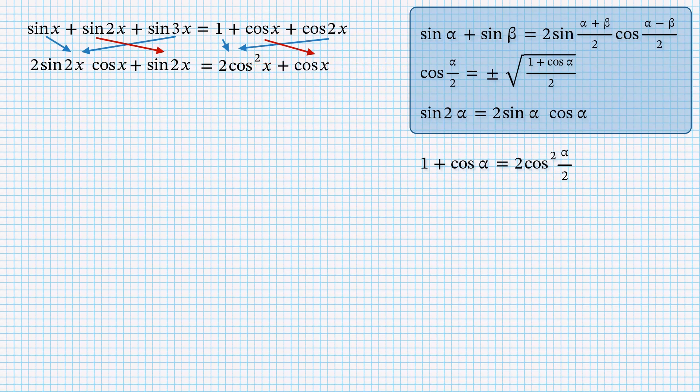We see that the left hand side contains common factor sine of 2x and the right hand side contains a common factor which is cosine of x. So we factorize both sides and surprise, we've got a new common factor 2 times cosine of x plus 1. So we move the whole right hand side to the left leaving 0 at right and factorize the left hand side.